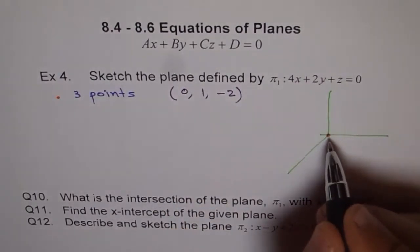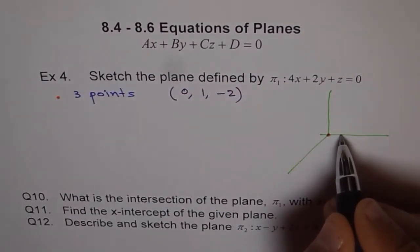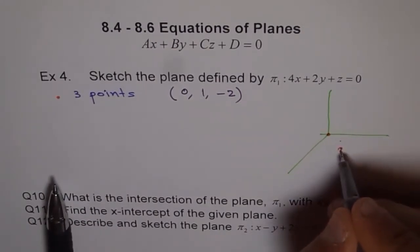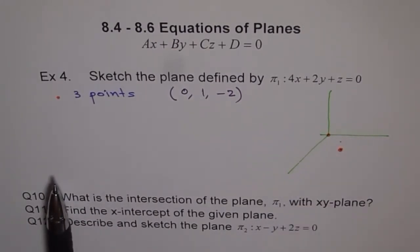0, 1 minus 2. So, 0, 1 here and minus 2 will mean 1 and 2, right? So, that point. So, let's say this is our point 0, 1 minus 2. Correct?